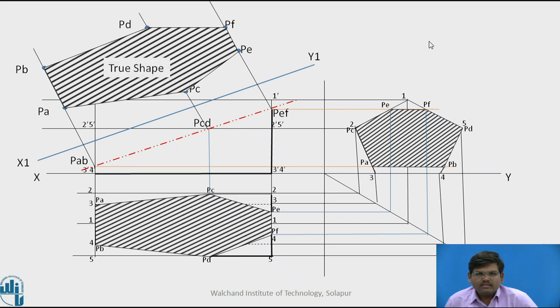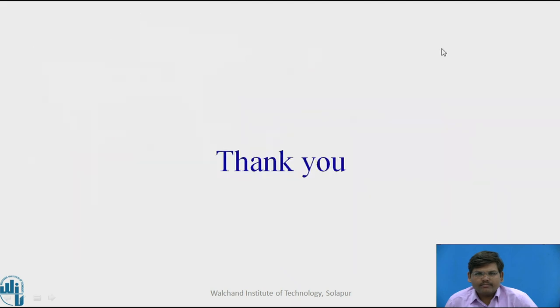So this is the projection of a prism and this is the way you obtain the true shape of a solid. Thank you.